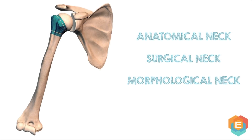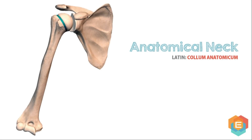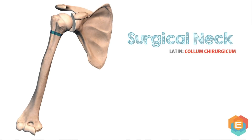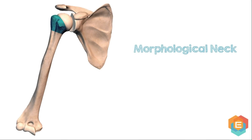2. Neck. The humerus has three necks: anatomical neck, surgical neck, and morphological neck. The anatomical neck is constricted at the margins of the rounded head and provides connection to the capsular ligament of the shoulder joint. The surgical neck is a short constriction in the upper end of the shaft, below the greater and lesser tubercles, or below the epiphyseal line. The morphological neck is the junction between diaphysis and epiphysis, and is represented by an epiphyseal line in the adult bone.